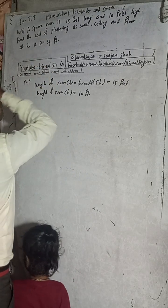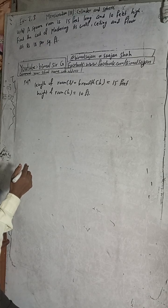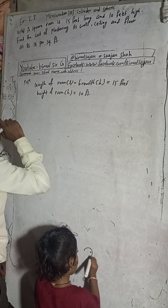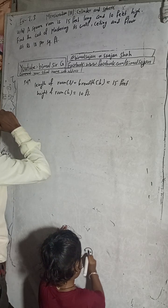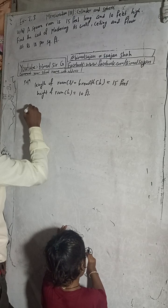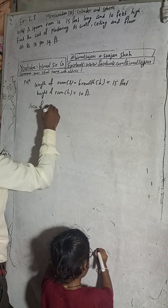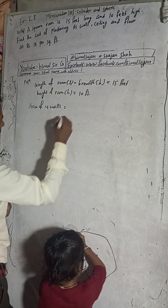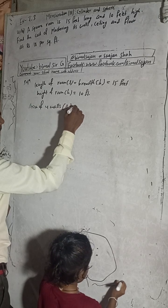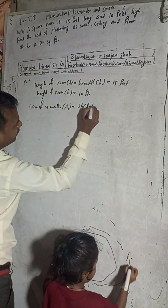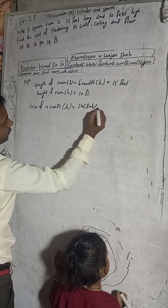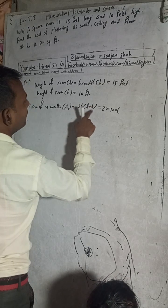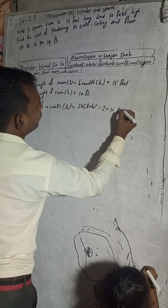Now we need to find the cost of plastering its walls, ceilings, and floor, so we will find the area. Area of four walls — let's call this A1. The formula is 2H into (L plus B). So here, 2 into H, which is 10 feet, into L plus B, which is 15 plus 15.